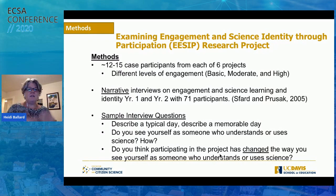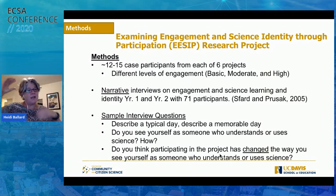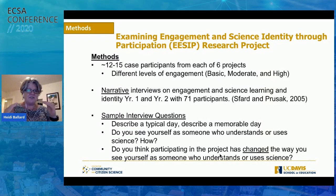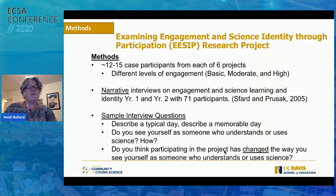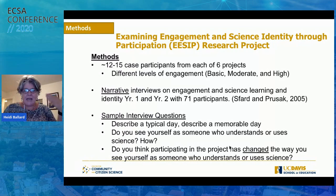My team — my graduate student team — did 230 interviews with 70 people over four years across those six projects. They were an hour long or more phone interviews. We worked with program leaders to select people at different engagement levels, and used what became the dimensions of engagement — published separately — to determine basic, moderate, and high levels of engagement. We asked people: tell me about a typical day when you're doing this project; do you see yourself as someone who understands or uses science; and has participating in the project changed the way you see yourself in relation to science?